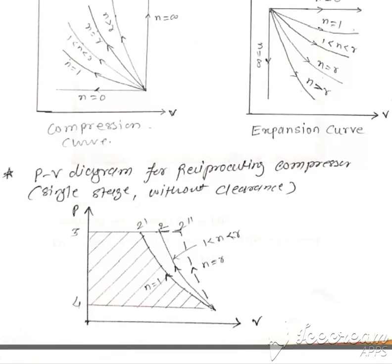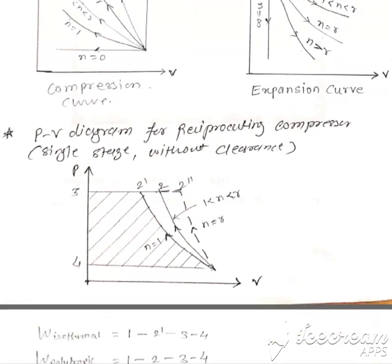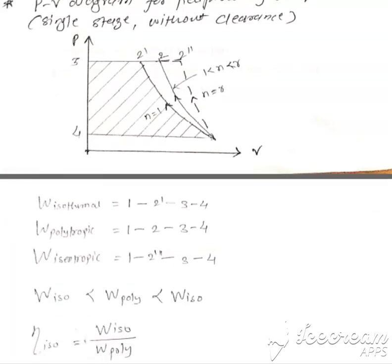Now consider isentropic compression. Process 1-2 is an isentropic compression. Now, the area under the curve 1-2 is a minimum for the isothermal case.